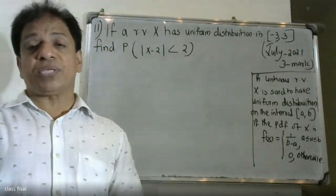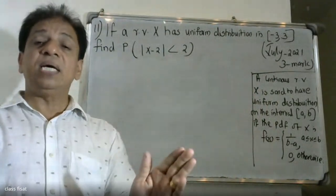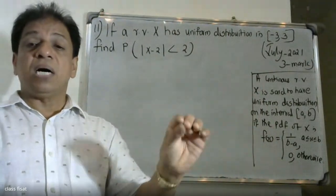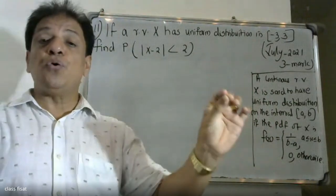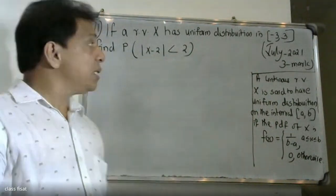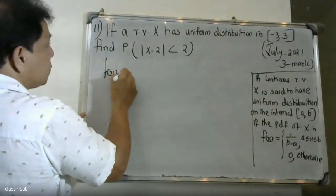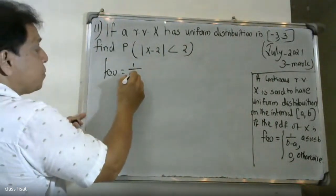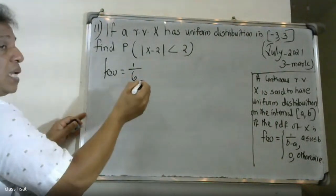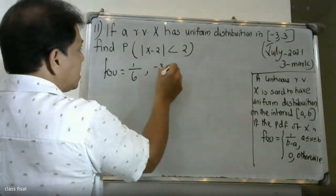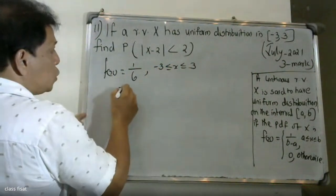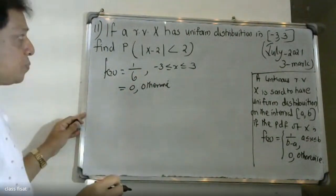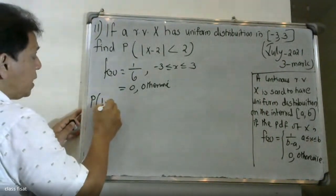The variable range function value here is 1/(b minus a). Now for this problem, f(x) equals 1/(3 minus (minus 3)) = 1/6, for minus 3 less than or equal to x less than or equal to 3, and 0 otherwise. This is our uniform distribution setup.